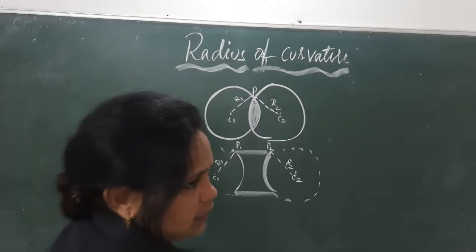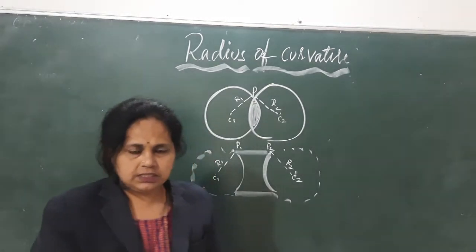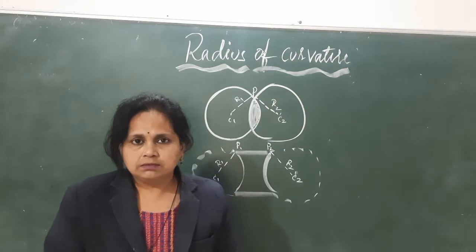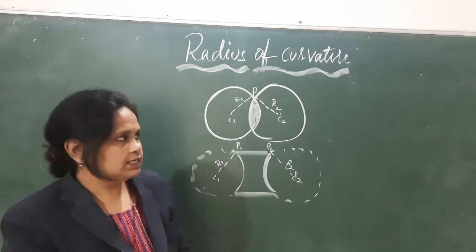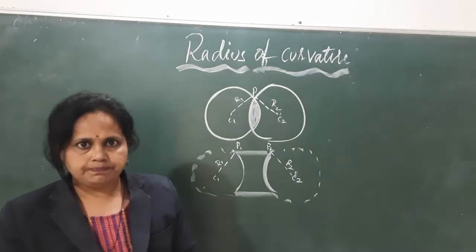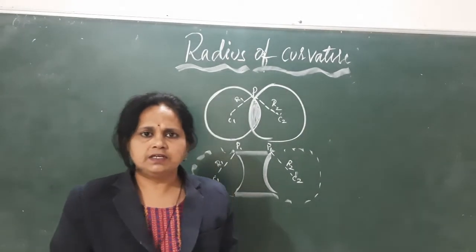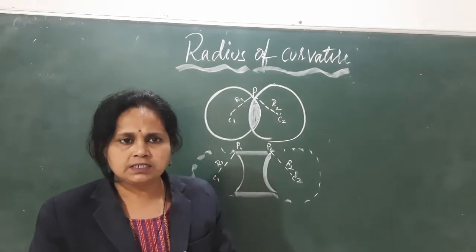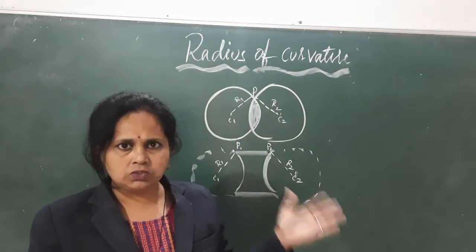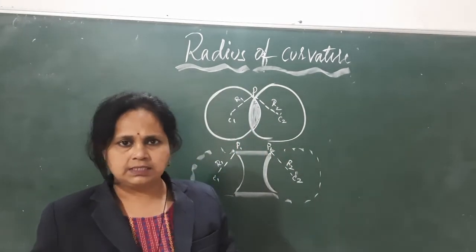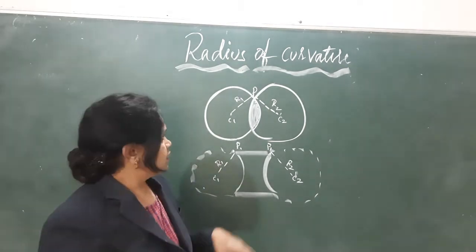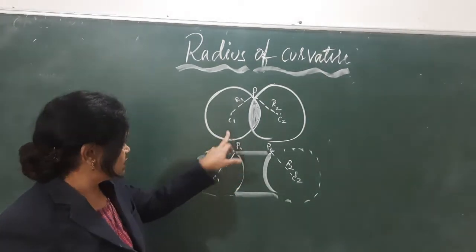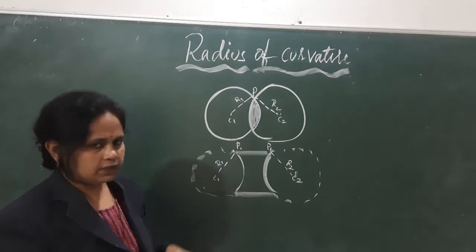Hello everyone. Let us today see the second technical term with the lens, that is the radius of curvature. As we have understood center of curvature, once we understand that, all these terms will be easily understood. Here I have placed both the lenses — this is a convex lens and this is a concave lens.